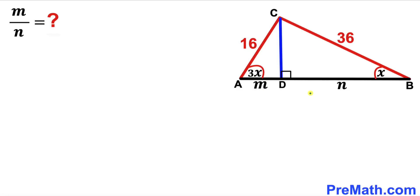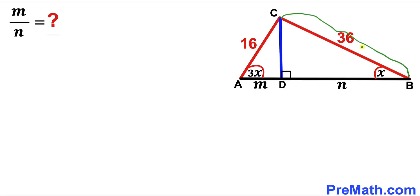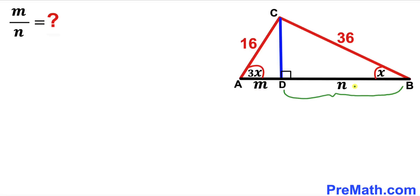Welcome to pre-math. In this video we have triangle ABC along with perpendicular CD, such that side length AC is 16 units and side length BC is 36. Segment AD is represented by m and segment BD is represented by lowercase n. Angle DBC is x and angle DAC is 3 times x. Our task is to find the ratio of m and n.